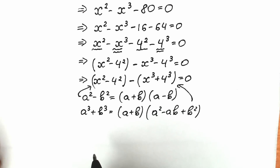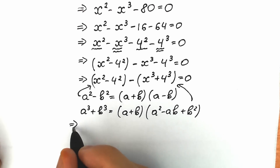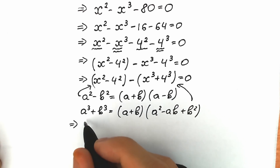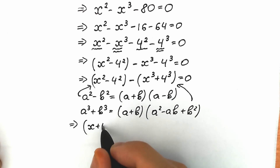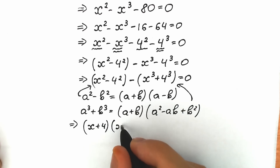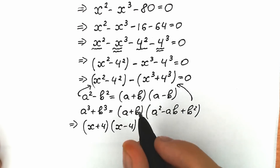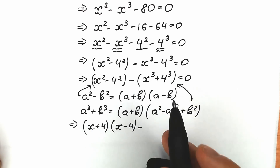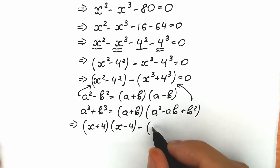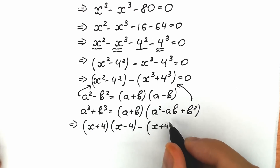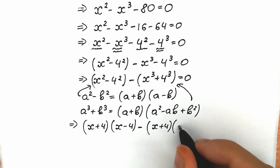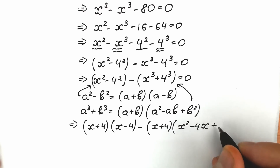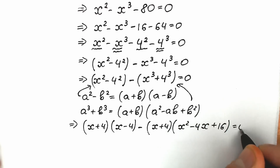Applying the identities, the difference of squares gives us (x plus 4)(x minus 4). For the sum of cubes we get (x plus 4)(x squared minus 4x plus 16). So the expression becomes (x plus 4)(x minus 4) minus (x plus 4)(x squared minus 4x plus 16) equal to zero.